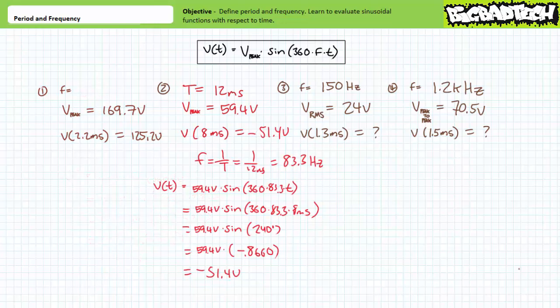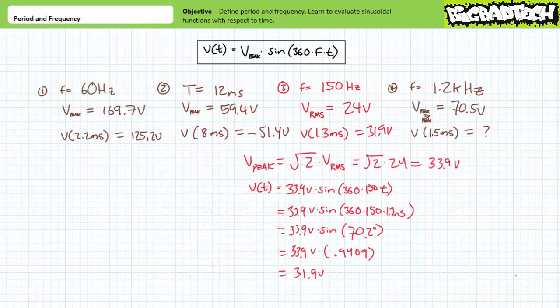For Example 2, given a peak value of 59.4 V and a period of 12 ms, we first convert: a period of 12 ms equals a frequency of approximately 83.3 Hz. The time-variant function is V(t) = 59.4 V × sin(360 × 83.3 × t). Substituting 8 milliseconds yields an angle of 240 degrees. Sine of 240° is approximately −0.8660, and multiplying by the peak value of 59.4 V yields approximately −51.4 volts.